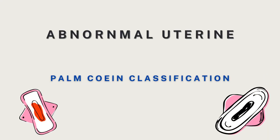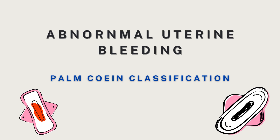Hello everyone. Proceeding with the next chapter of abnormal uterine bleeding, we are discussing the causes of abnormal uterine bleeding — the PALM-COIN classification. We have already discussed P, A, and L — that is polyps, adenomyosis, and leiomyoma or uterine fibroids — in our previous videos. Next on the list is M, that is malignancy.